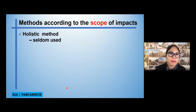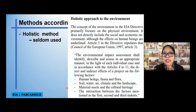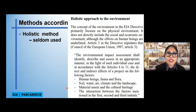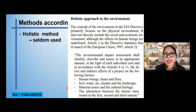The first method is the holistic approach, or holistic methods. However, the holistic method is seldom used because it specifically focuses on the primary environment. It does not directly include the social and economic environment per se — it only considers the physical aspect. The environmental impact assessment using this approach solely focuses on the physical environment.